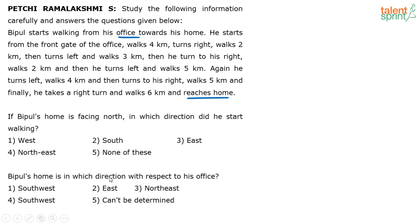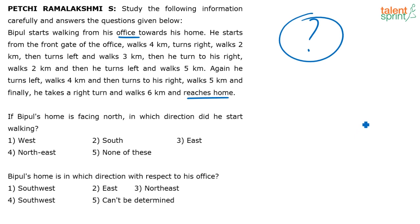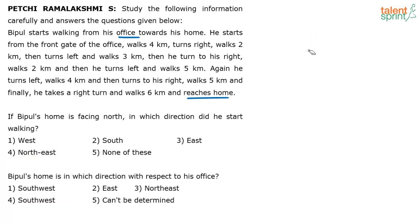Two questions have been asked here, so let's trace the path correctly. Bipul starts walking from his office towards his home from the front gate of the office. The biggest question here is: in which direction did he start? The starting direction is not known to us. What do we do? We assume one of the directions and start. If required, we will change it towards the end — we can just rotate the whole path and get the required answer.